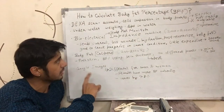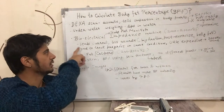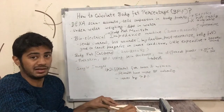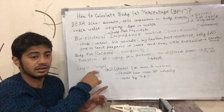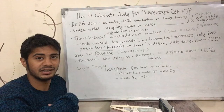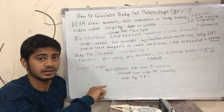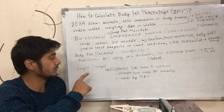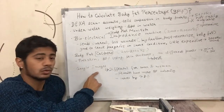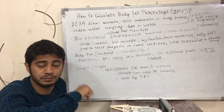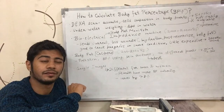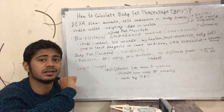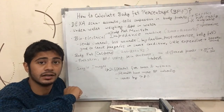I usually use the caliper and the bioelectrical impedance monitor to estimate my body fat levels, and I also often use the Google Images method to find a person who resembles my physique. The basic methods I would recommend are body fat calipers and Google Images. If you have any questions, please put them in the comment box. If you like the video, please like it, subscribe to the channel, and turn on notifications for future videos.